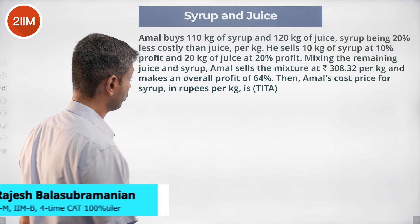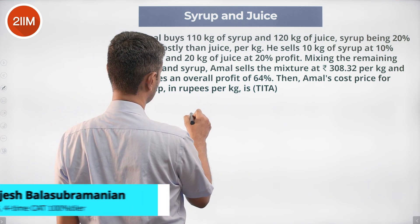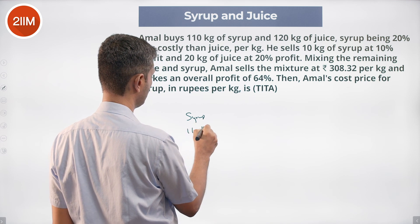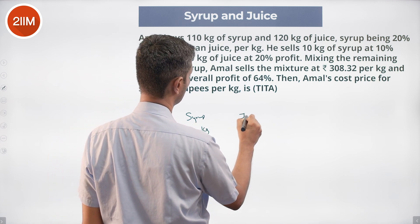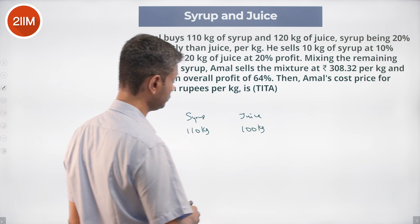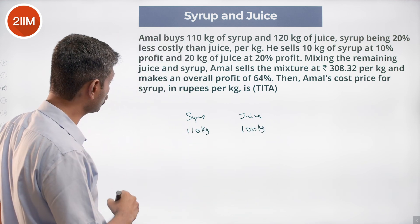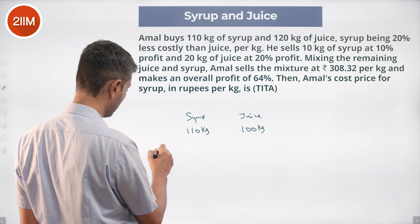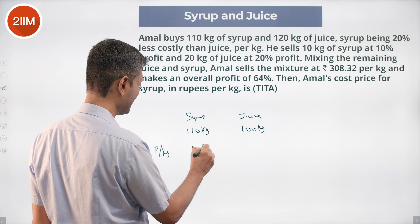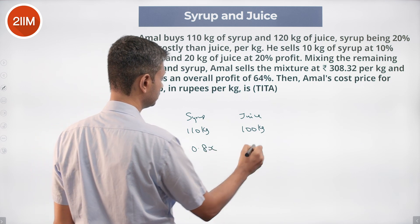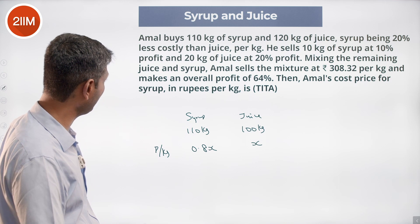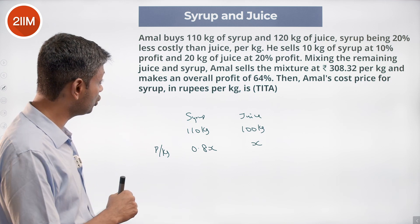Amal buys 110 kilograms of syrup and 120 kilograms of juice. Syrup is 20% less costly than juice per kilogram, so if juice is X per kilogram, syrup is 0.8X per kilogram. He sells 10 kg of syrup at 10% profit and 20 kg of juice at 20% profit.